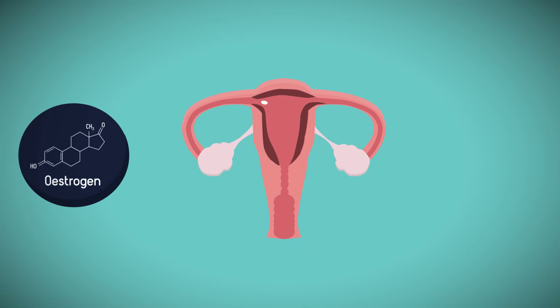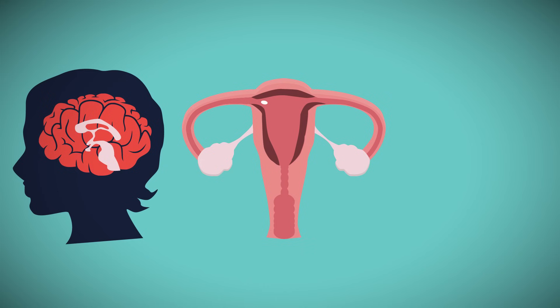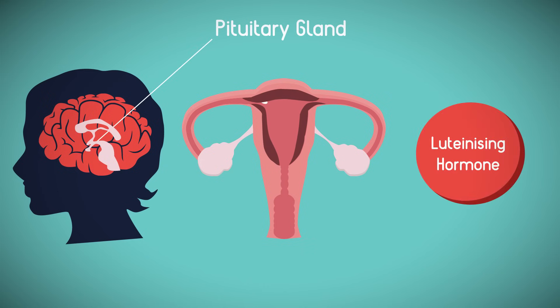In addition, oestrogen stimulates the pituitary gland to secrete the luteinising hormone, which is directly responsible for ovulation.